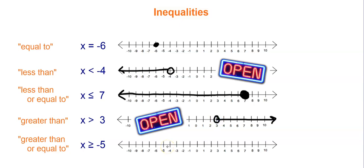The last symbol is greater than or equal to. This one is all the numbers to the right of negative 5, all the numbers bigger than negative 5. And because it has the equal to symbol — the line underneath — we're going to do a closed circle on negative 5.